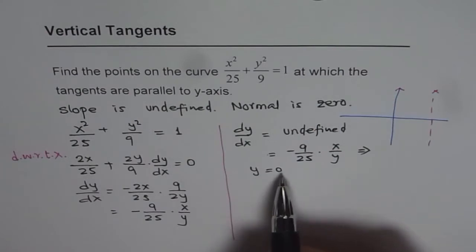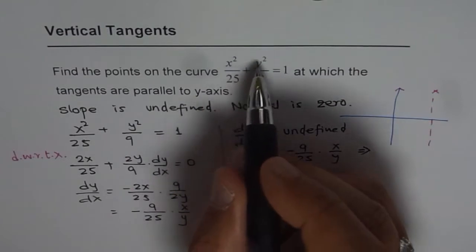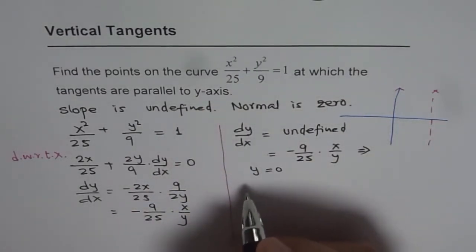So the point is where y is 0. So that is our solution. Now if y is 0, what is the value of x? So let's substitute y is 0 in our equation and find x.